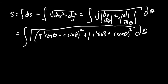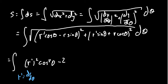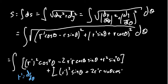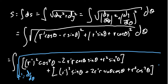Now you have to FOIL these things out — it might seem complicated, but this is actually a saving grace. Foiling out the first one gives r prime squared cosine squared theta, minus 2r prime r cosine sine, plus r squared sine squared theta. The next one foiled out gives r prime squared sine squared, plus 2r prime r sine theta cosine theta, plus r squared cosine squared theta.